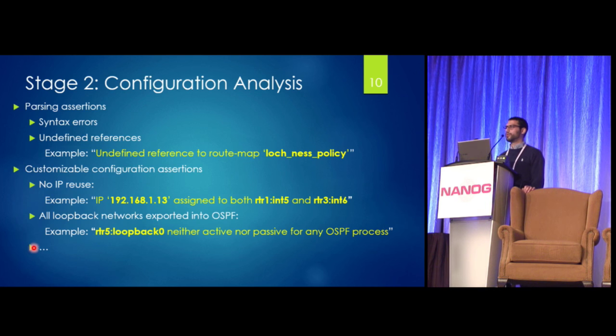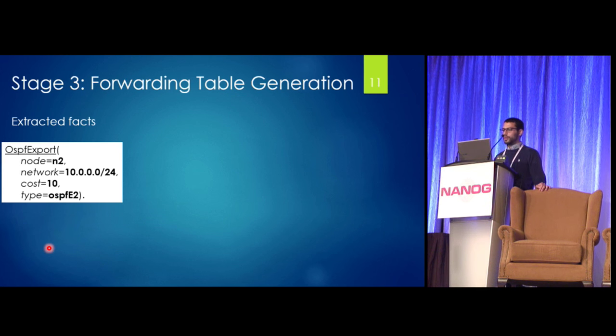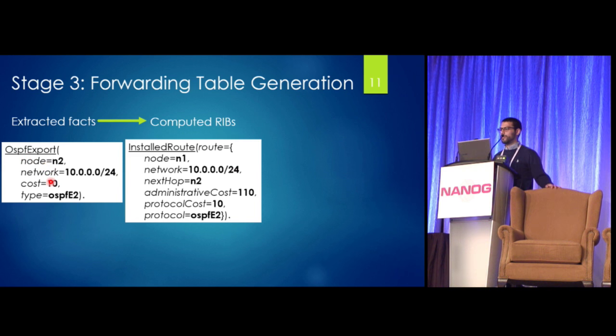And of course you can design your own queries as well, and I'll talk about that later. So after you process the configurations and now you have a model to handle all of them, we also are now able to generate the forwarding tables. So we start with some basic facts from the configurations, like the fact that a particular network may be exported into OSPF. And using all of these facts together, we're able to compute the actual RIBs that should result if the routers are working properly according to the spec.